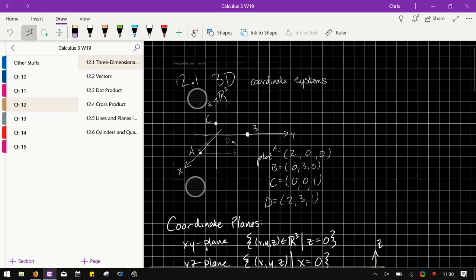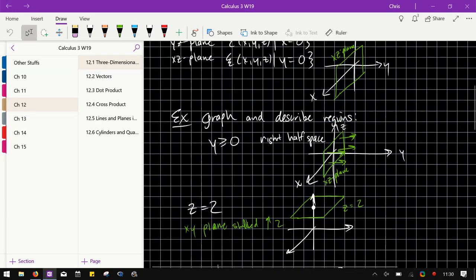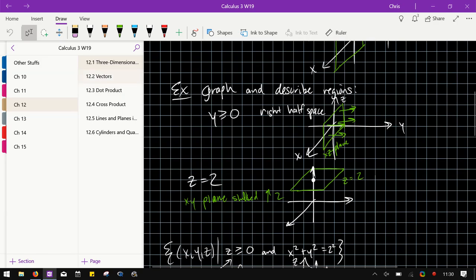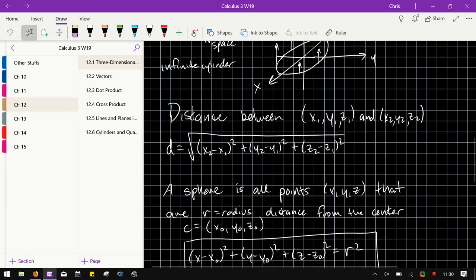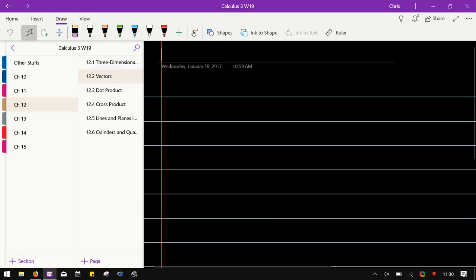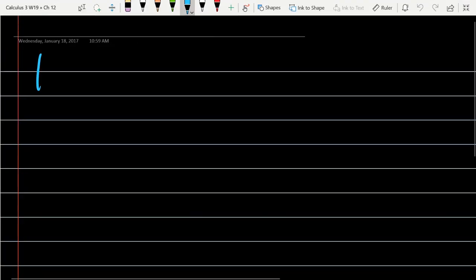Before we talked about why it's hard to graph in three dimensions, so now what we're going to do is look at vectors, which is section 12.2. We'll start with the definition: a vector in R^n is just a directed line segment.